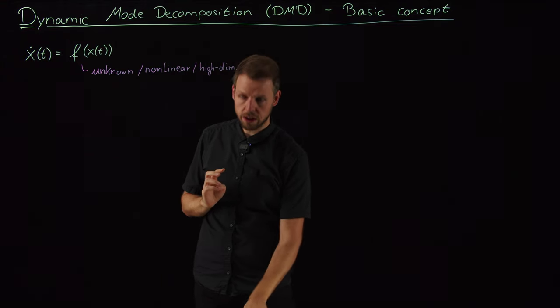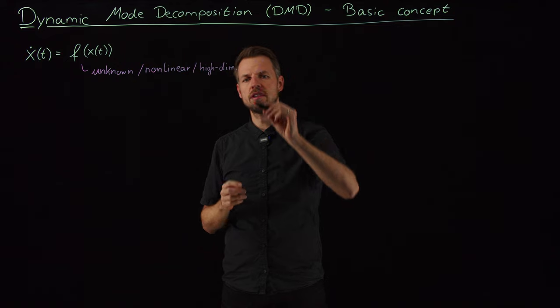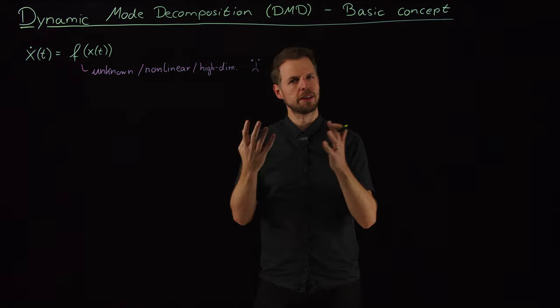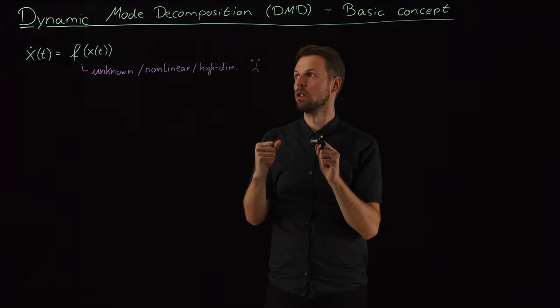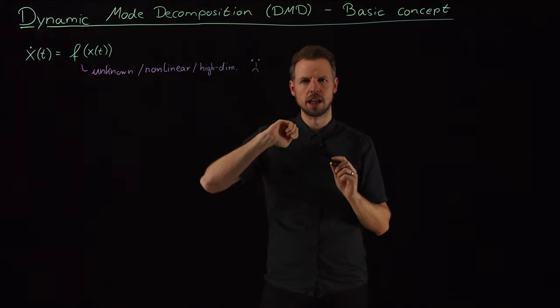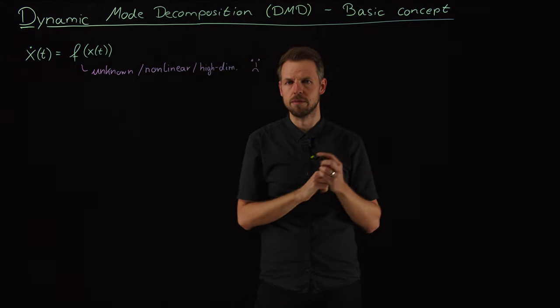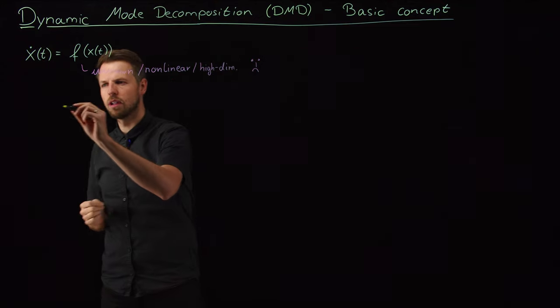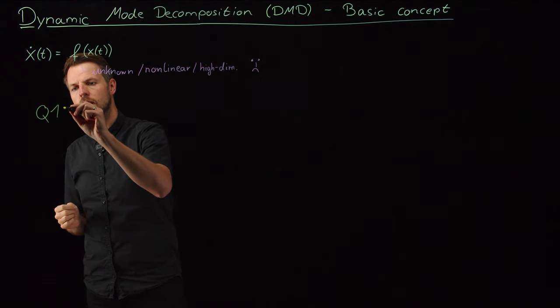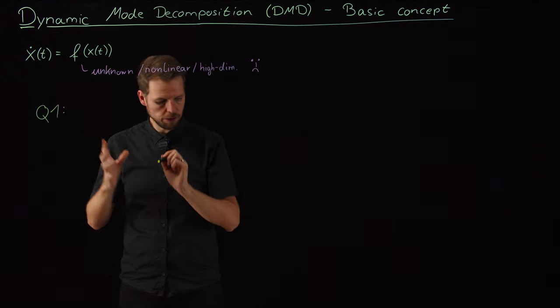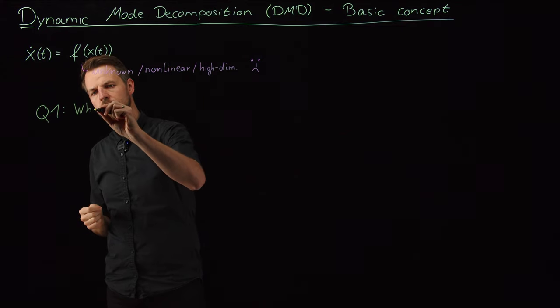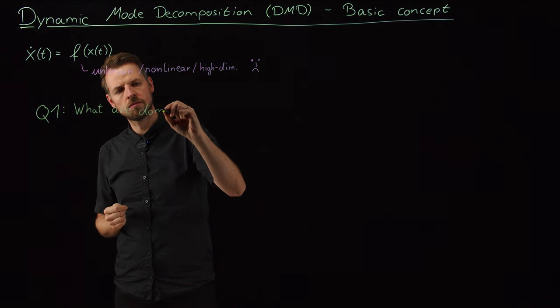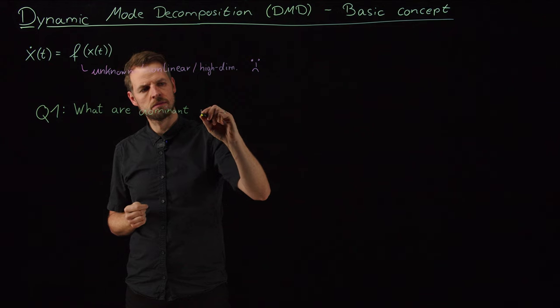And so two questions that we would like to answer. We're not very satisfied with this situation, and we would like to address this to maybe get some of the methods back that we like so much in linear systems. And this is what the dynamic mode decomposition is all about, or short DMD. So two questions that we want to address or that are of interest in most system analysis problems. First of all, what are the dominant patterns in my dynamical system?